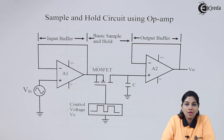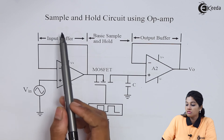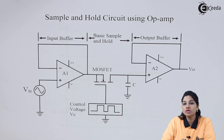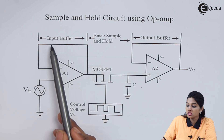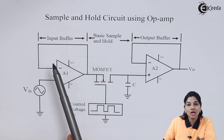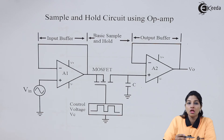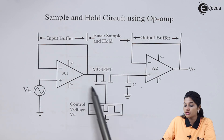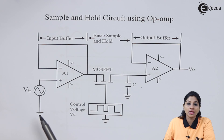To understand the sample and hold circuit using Op-Amp, let's consider the circuit diagram. The figure shows a sample and hold circuit using Op-Amp. The diagram is divided into three parts: first is the input buffer, second is the basic sample and hold circuit, and third is the output buffer. The basic sample and hold circuit consists of a MOSFET, a control voltage Vc, and a capacitor C.